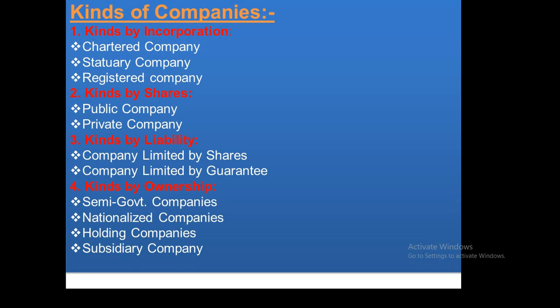Kinds by ownership: government companies have a range of government ownership. An example is Karachi Electric Supply Corporation, which is a government-related company.